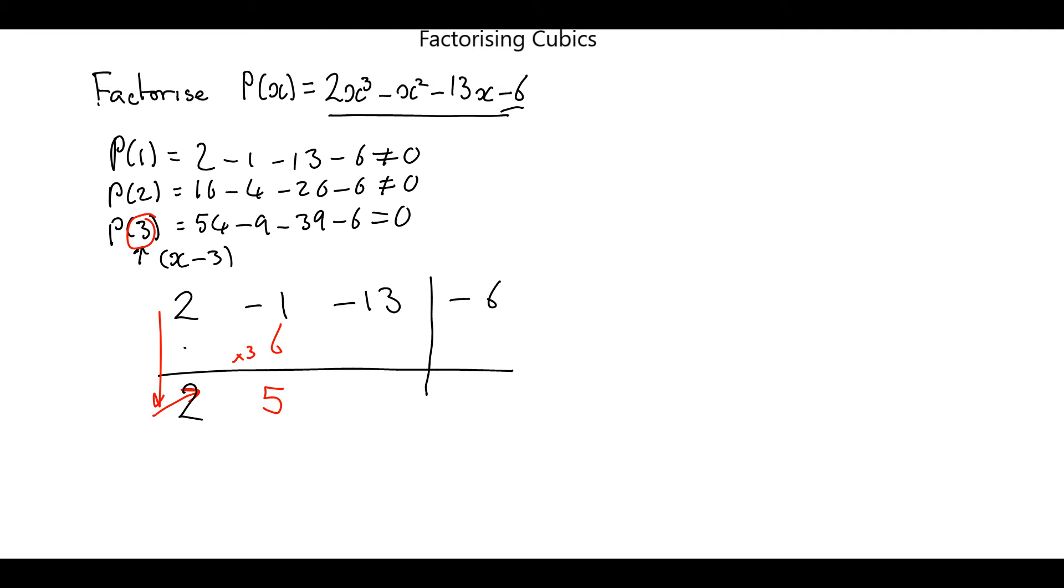We now multiply by that root again, so 5 multiplied by 3 is 15, going in that direction there. Remember we add vertically, so that gives us 2. We now multiply by that root again, gives us 6, and then we add vertically and we get 0. If we get 0, we already know it's a factor, we know we've done it right.